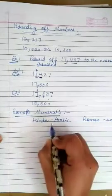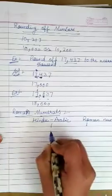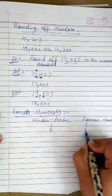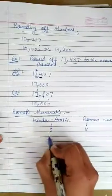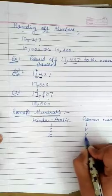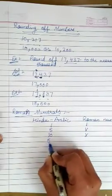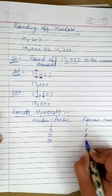For 1, we use this number. For 5, we use V. For 10, we use X. And for 50, we use L.